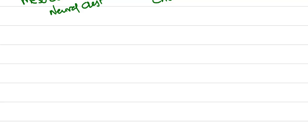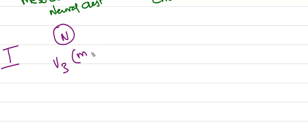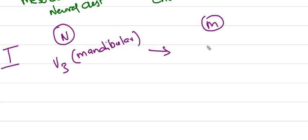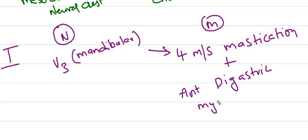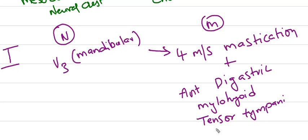Coming to the first pharyngeal arch: the nerve derived from the first pharyngeal arch is the mandibular branch of the trigeminal nerve, that is V3. Muscles derived from the first pharyngeal arch are the four muscles of mastication — masseter, temporalis, lateral pterygoid, and medial pterygoid — as well as tensor tympani and tensor veli palatini. These are all derived from the first pharyngeal arch.